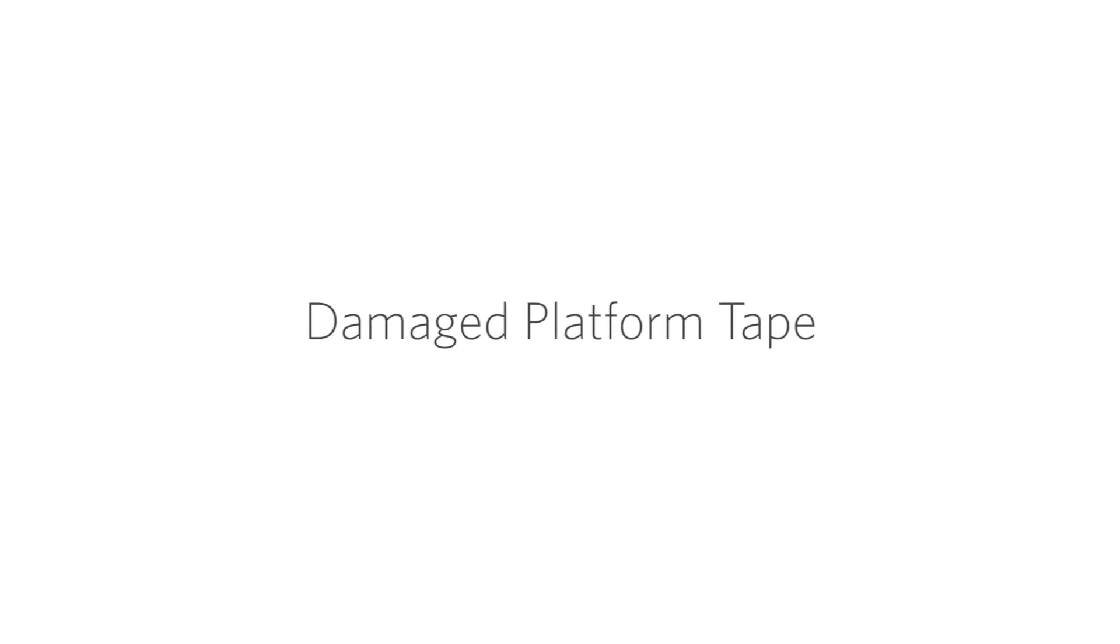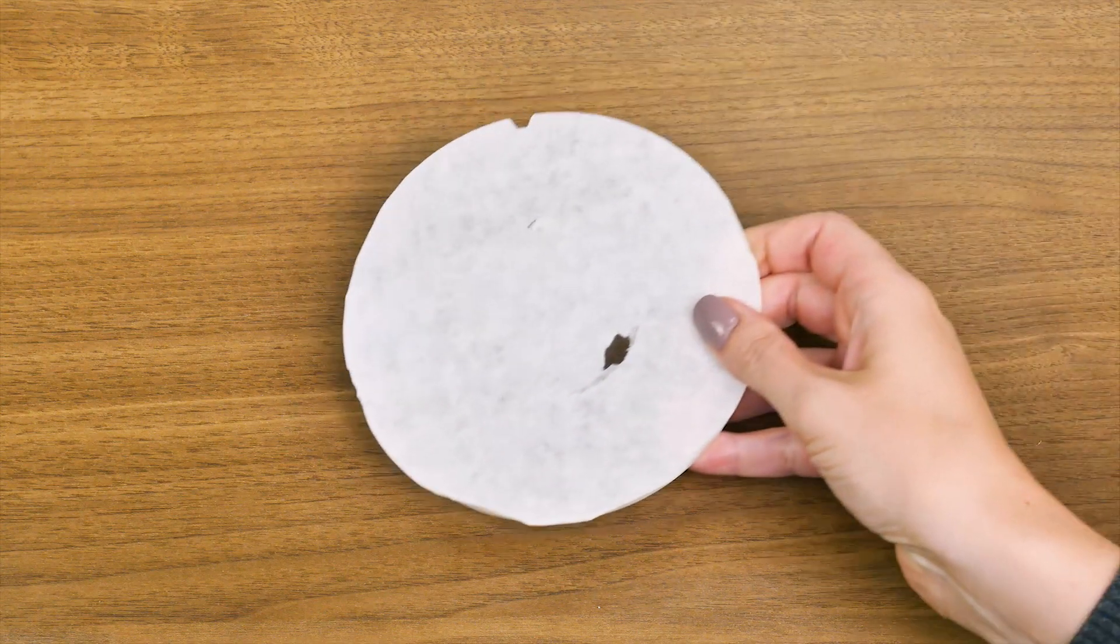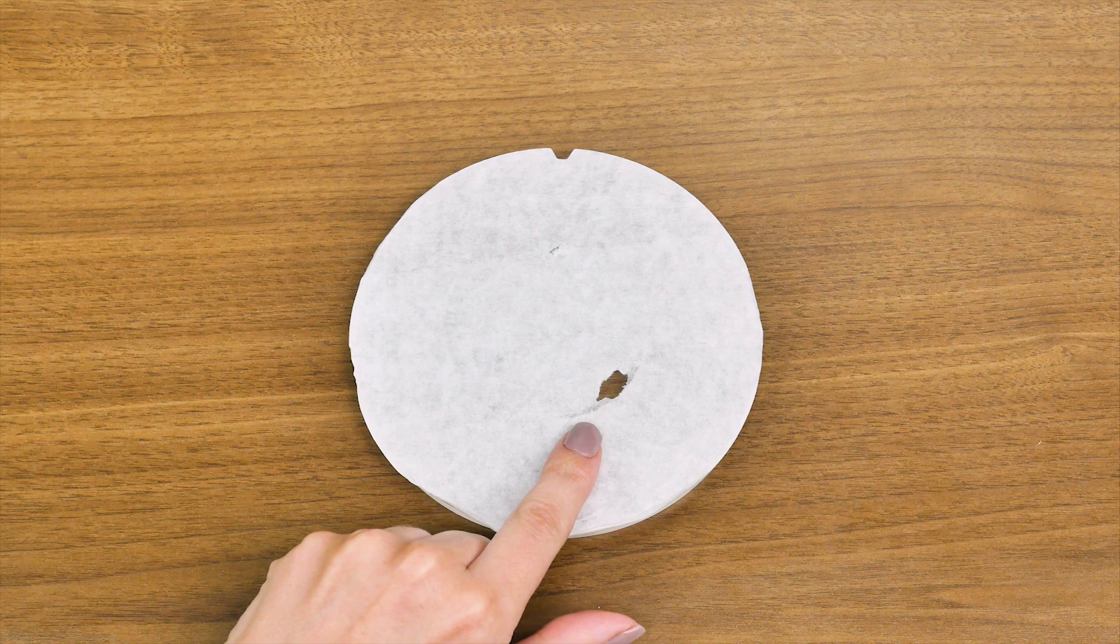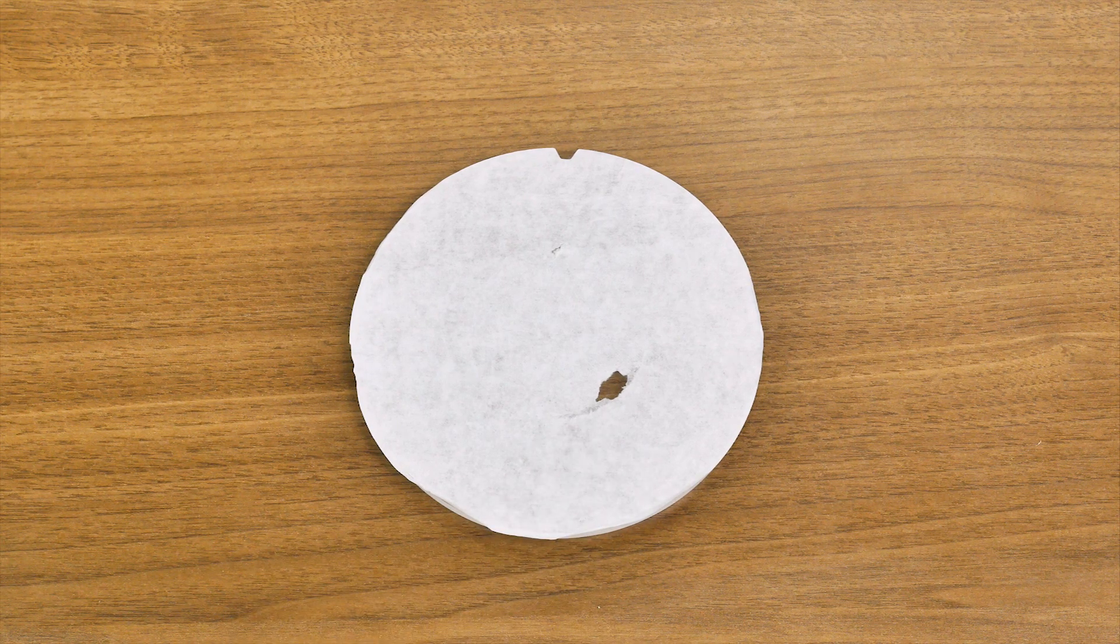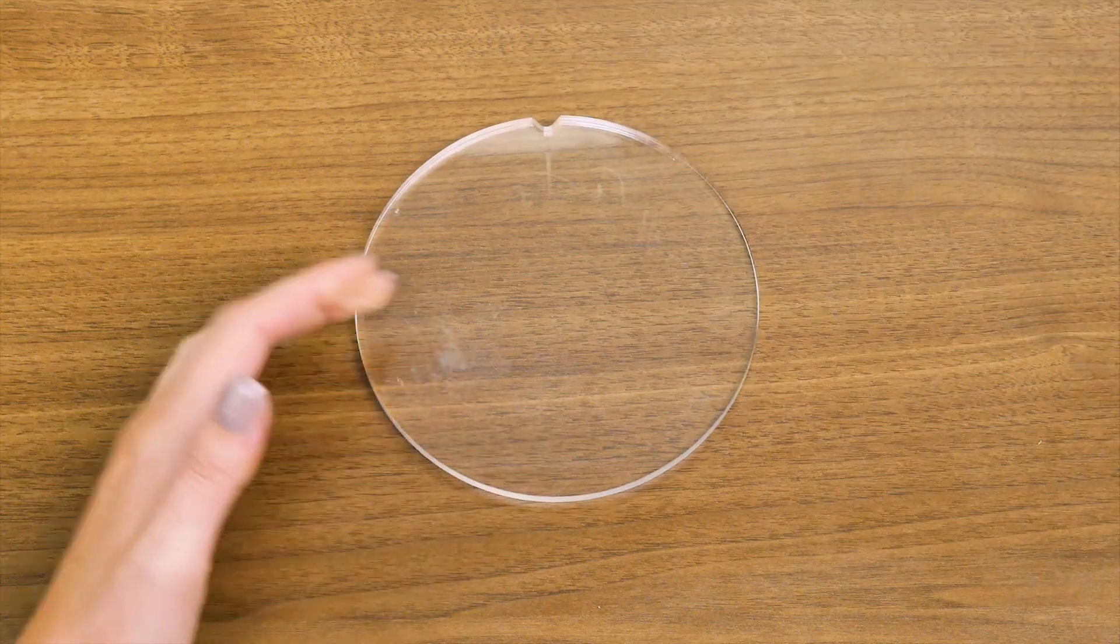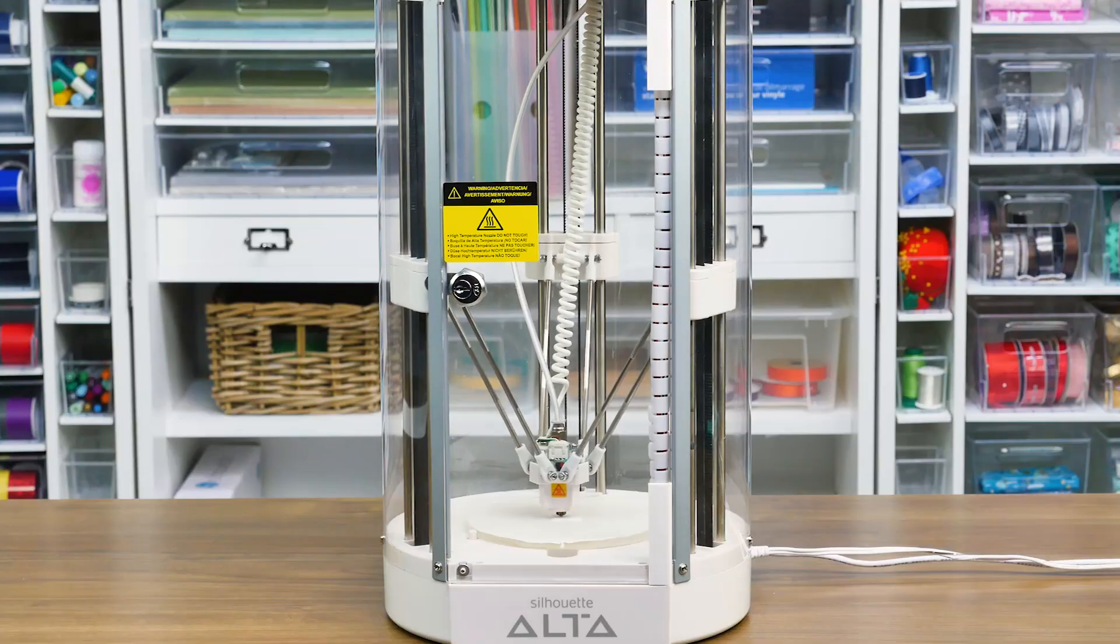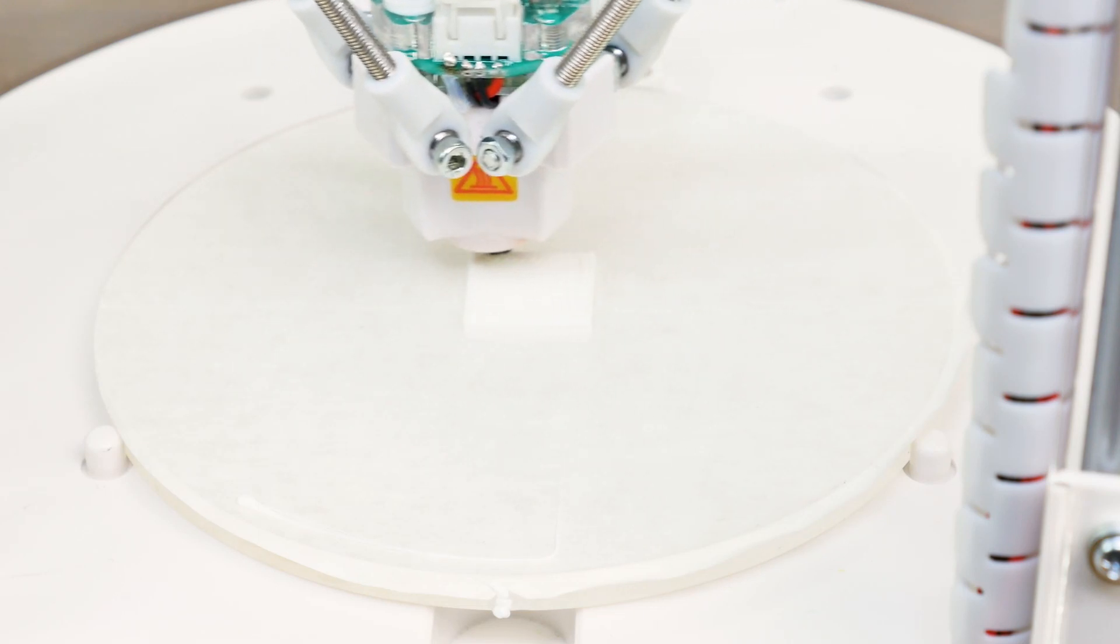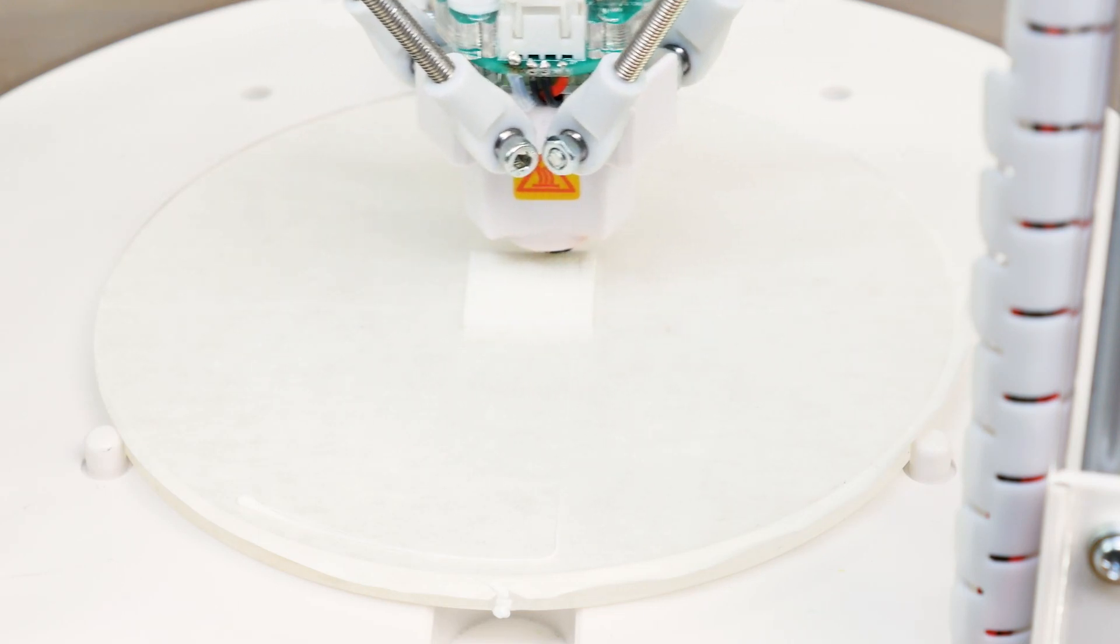Damaged platform tape. If you damaged the platform tape at all when you removed your 3D object, you may need to replace it before you attempt to print something else. Most platform tape sheets will last for about 5 to 10 prints, but that number will vary based on your experience and the settings of each printed object.